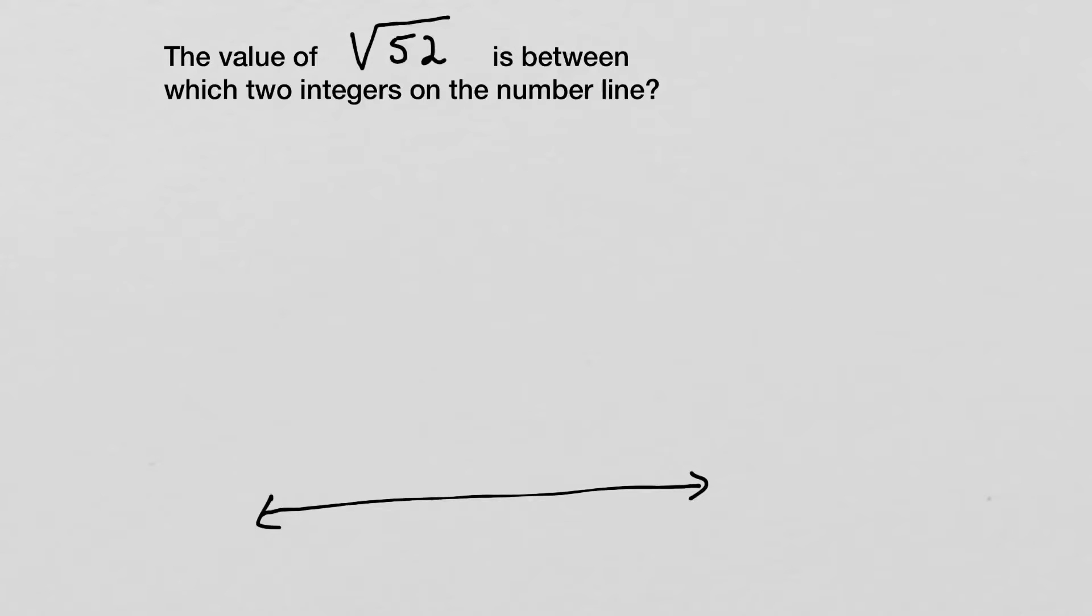In this question, we're not going to be able to use our calculators. So we're going to solve the value of the square root of 52 on the number line. In other words, we're going to estimate where it falls on the number line.